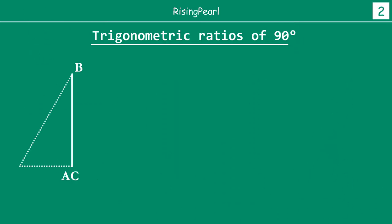Let's clean up a little. We started with A dash showing the original location of the vertex in triangle ABC, with the dotted line showing the original triangle. We have moved A all the way from A dash to coincide with C, so our current angle is 90 degrees. We just saw that sine 90 degrees is equal to 1.